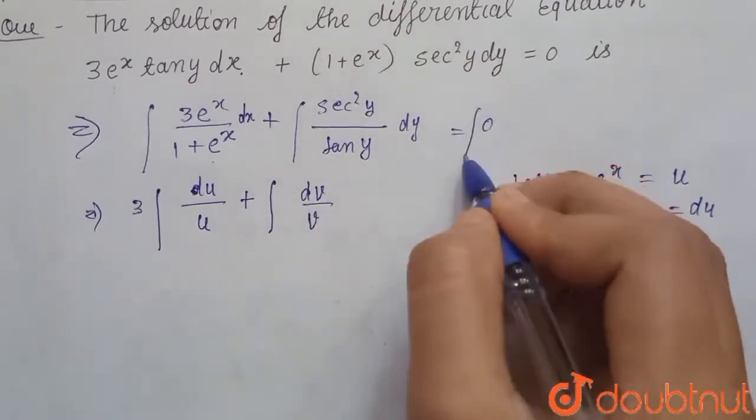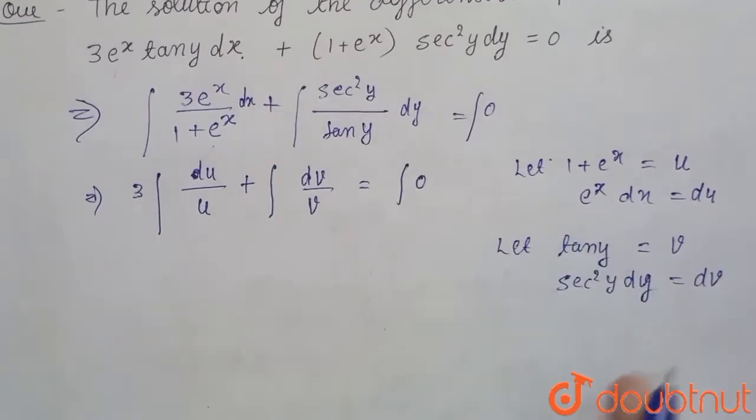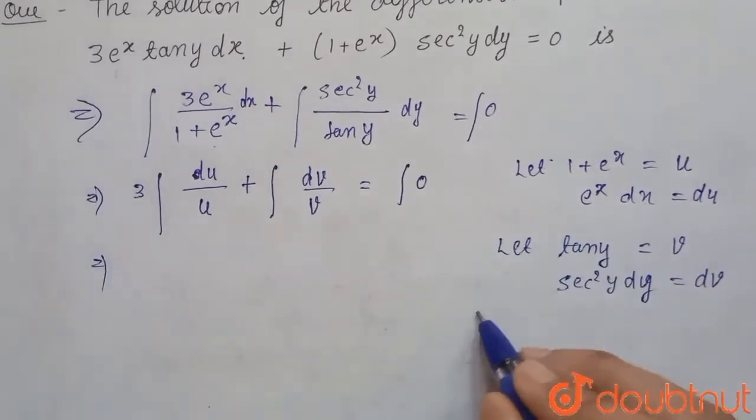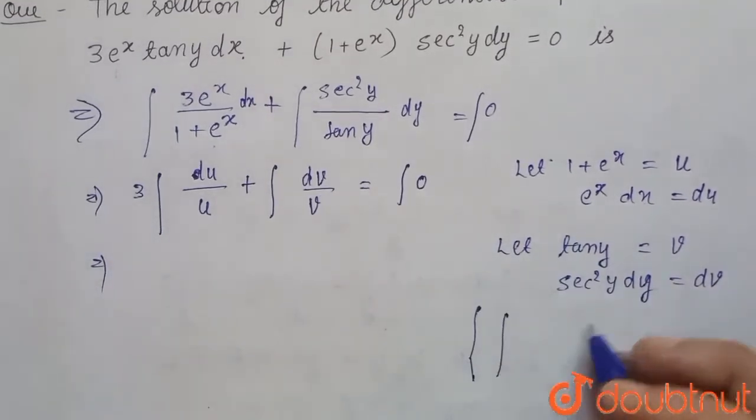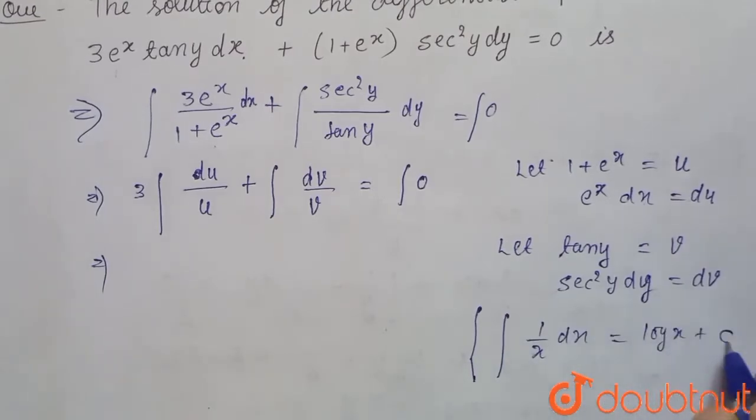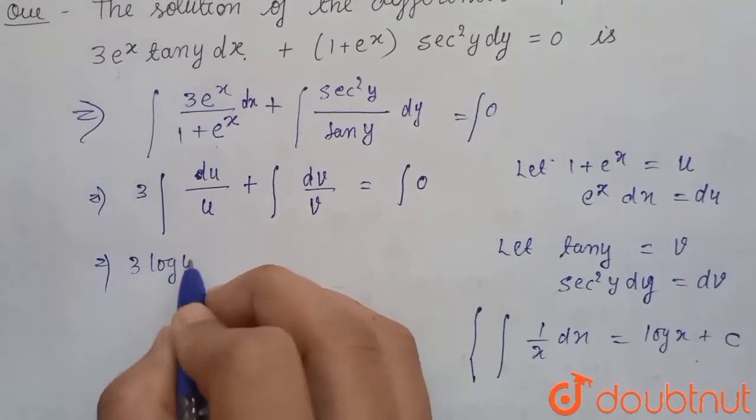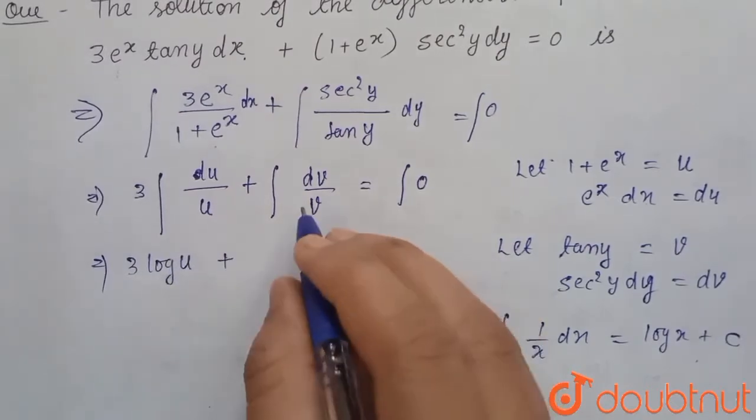equals 0. Now we know that integration of 1 upon x dx is log x plus c. So from this, here we get 3 log u plus here we get log v